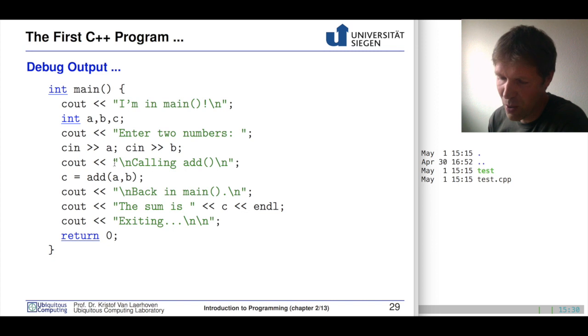So when we enter main, we say, I'm in main. When we're calling our function, we're saying, we're calling the function. When we're back in main, we say, we're back in main, et cetera. And when we execute this, you will see then everything printed out. So you know more or less what happened and that the sequence of events actually was the one that you expected it to be.